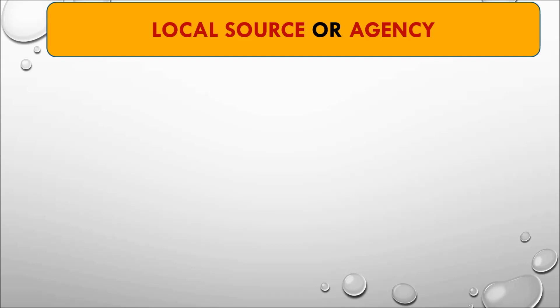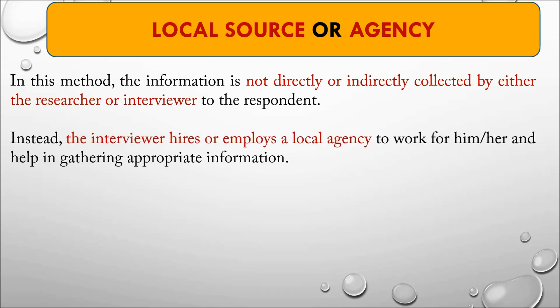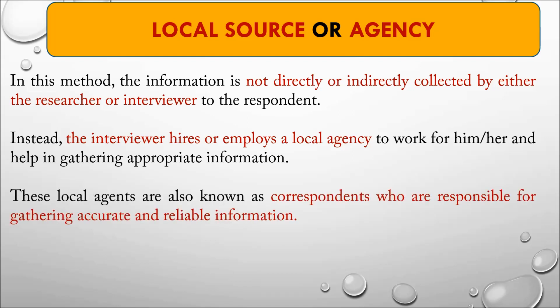Next is the local source or agency method. The researcher directly or indirectly collects data through local sources or agencies. The researcher hires or employs a local agency to work on their behalf — these people are known as correspondents, who are responsible for gathering accurate and reliable information from the field. However, it may be costly, and because it is not direct involvement of the researcher, reliability and interpretation may be questioned.